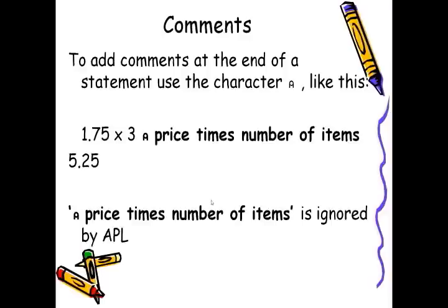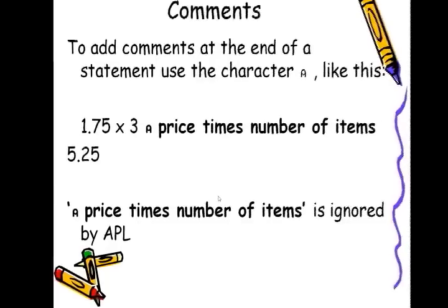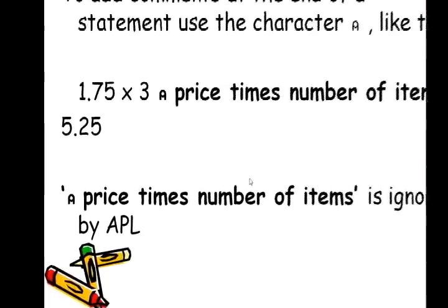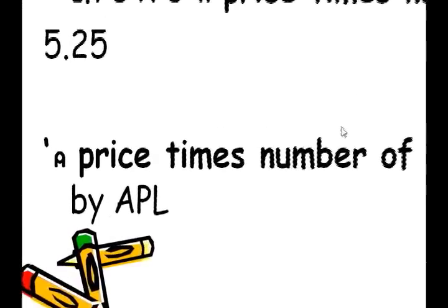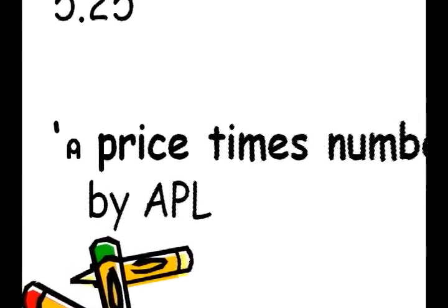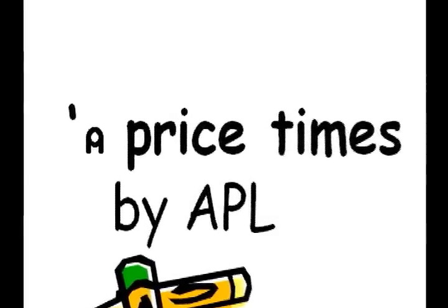So for example, here, you have the 1.75 times 3, but we have no idea what it is. So as a reminder, you put in that it is a price times the number of items. Later, when you come back to your line and you look at it, you can then remember what you did. The comments are ignored by APL. So here, only 1.75 times 3 is taken into account. That lamp symbol can be obtained by using CTRL-M or by using the language bar.